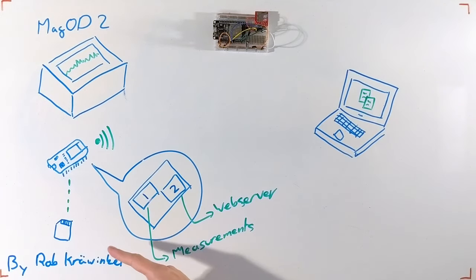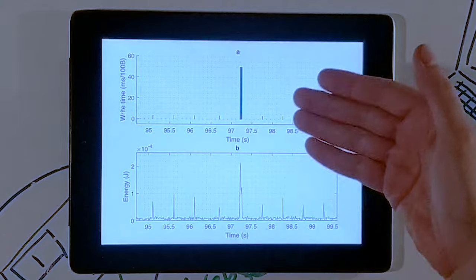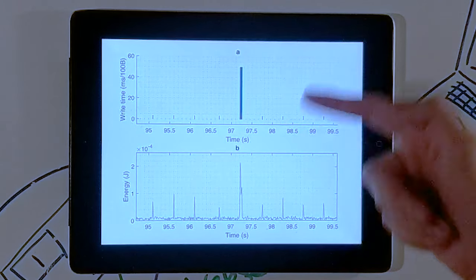The cause of the delays has been traced back to the SD card, as spikes in energy consumption could be seen coinciding with peaks in write time, as seen here.